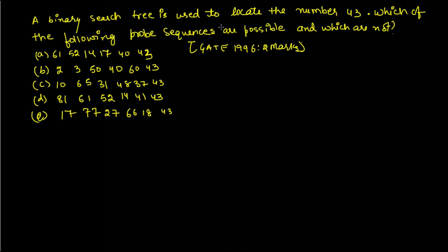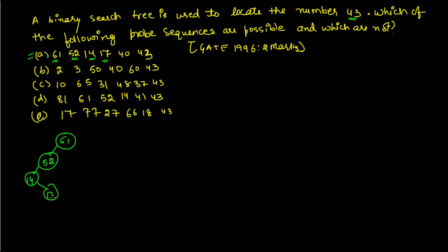This question was also asked in GATE 1996. A binary search tree is used to locate the number 43. We have to identify which of the given probe sequences are possible. In option A, the root contains 61, then 52 goes to the left because it is less than 61, then 14 goes to the left, then 17 goes to the right of 14, then 40 goes to the right, and finally 43 goes to the right of 40.